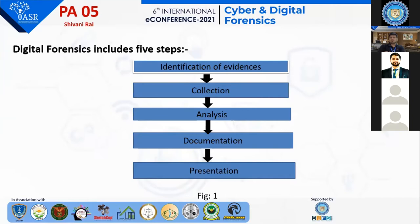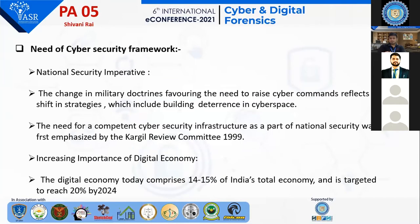What steps do forensic experts follow? The steps are: identification of evidences, collection, analysis, documentation, and presentation. Identification means identifying evidences related to digital crime in storage media — whatever evidence is found on the crime scene — to identify the hardware, software, whatever it may be. This is basically known as identification of evidence.